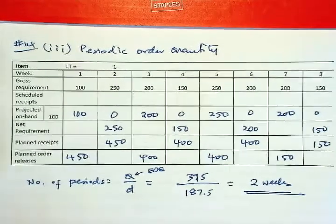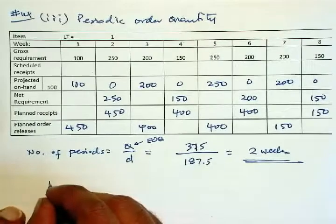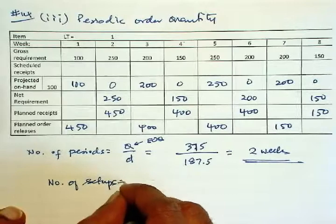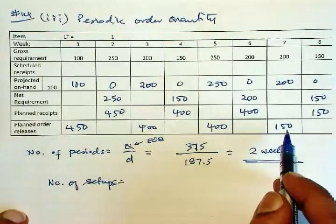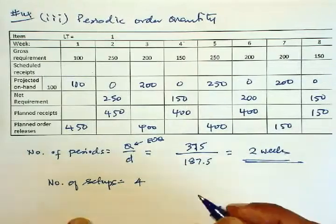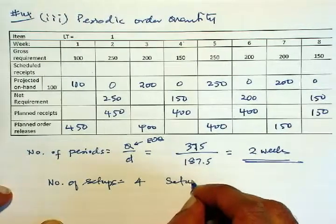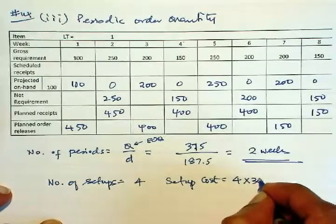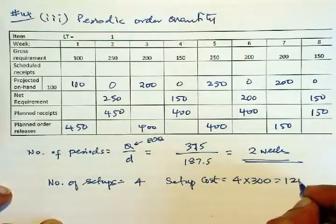So now we have to find the cost. So number of setups is 1, 2, 3, and 4. So setup cost is 4 times 300, which is 1,200.